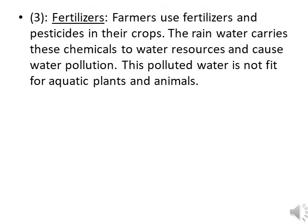The third source is fertilizers and pesticides. Farmers use fertilizers and pesticides in their crops. When rain falls on the crops, the rain water carries these chemicals to water resources — whether underground water resources or nearby fresh water sources — and causes water pollution. This polluted water is not fit for aquatic plants and animals.